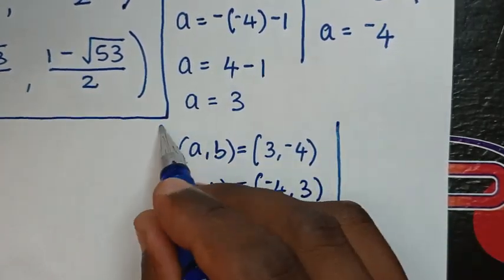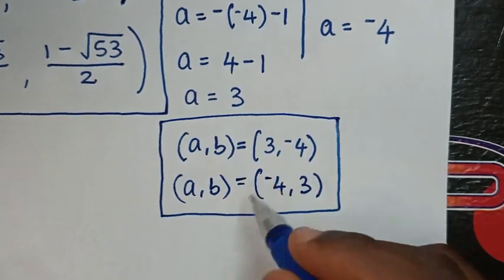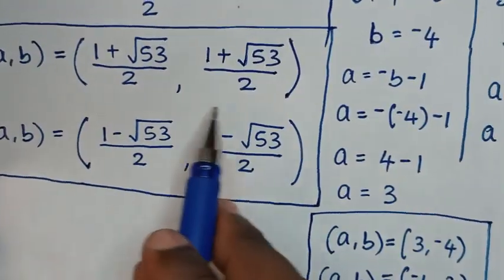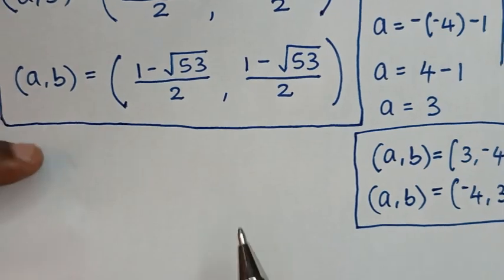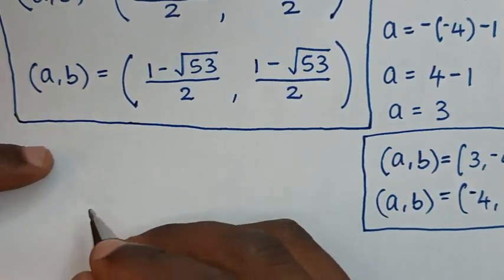We have a total of four solutions — these integer solutions are 3 comma negative 4 and negative 4 comma 3, while the irrational number solutions involve square root of 53. Now let's verify.